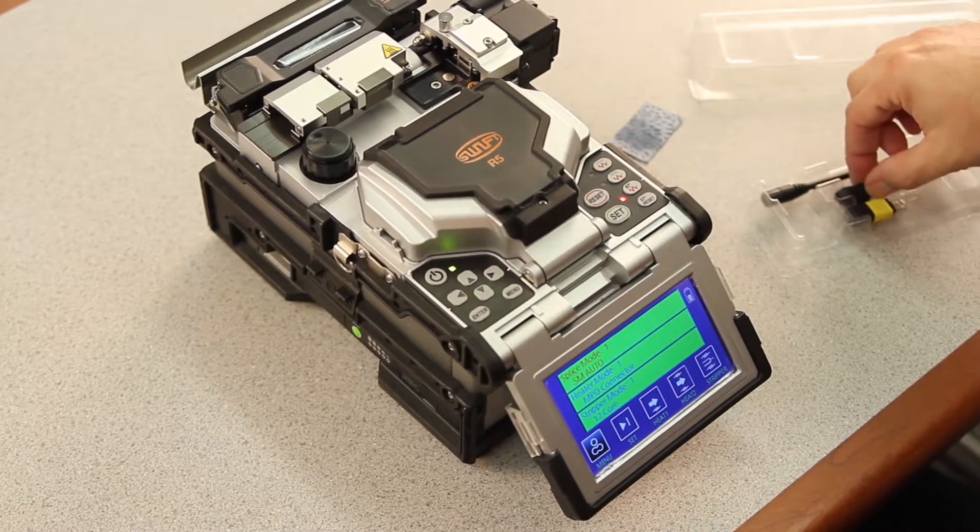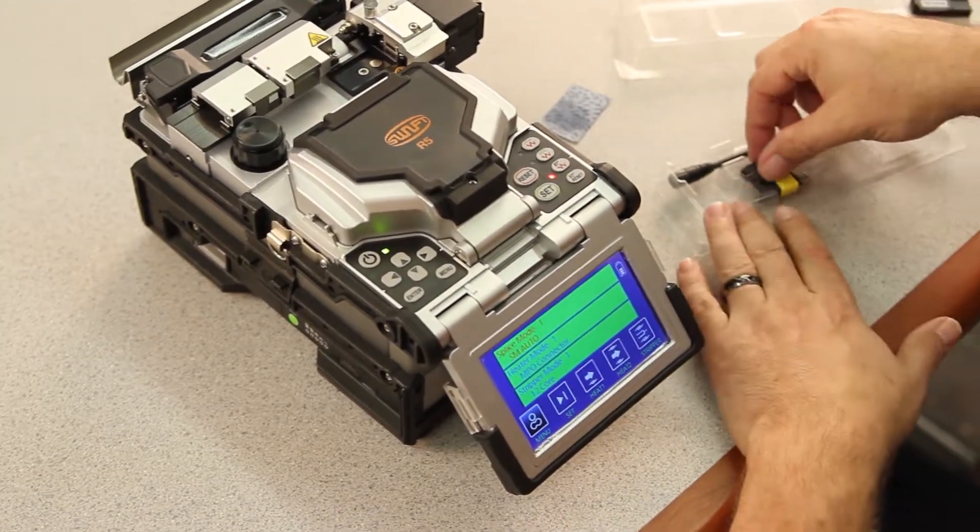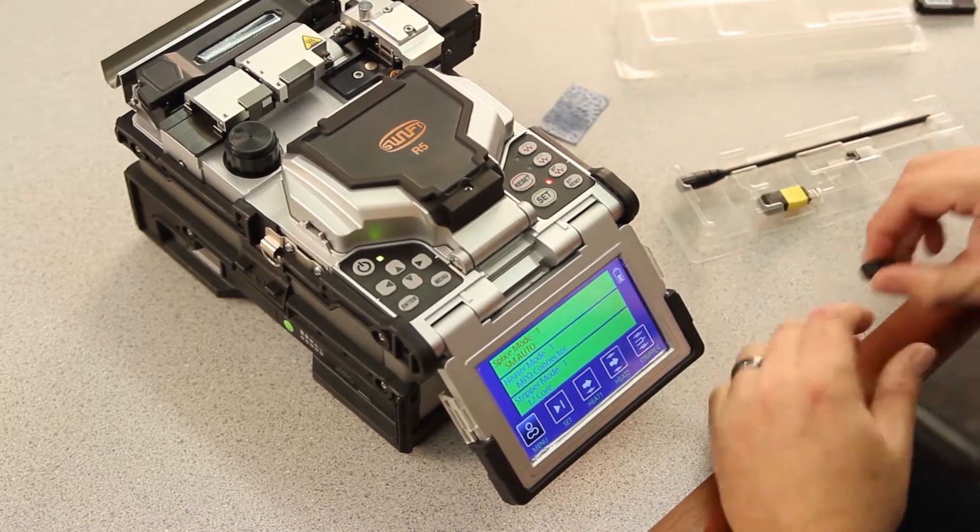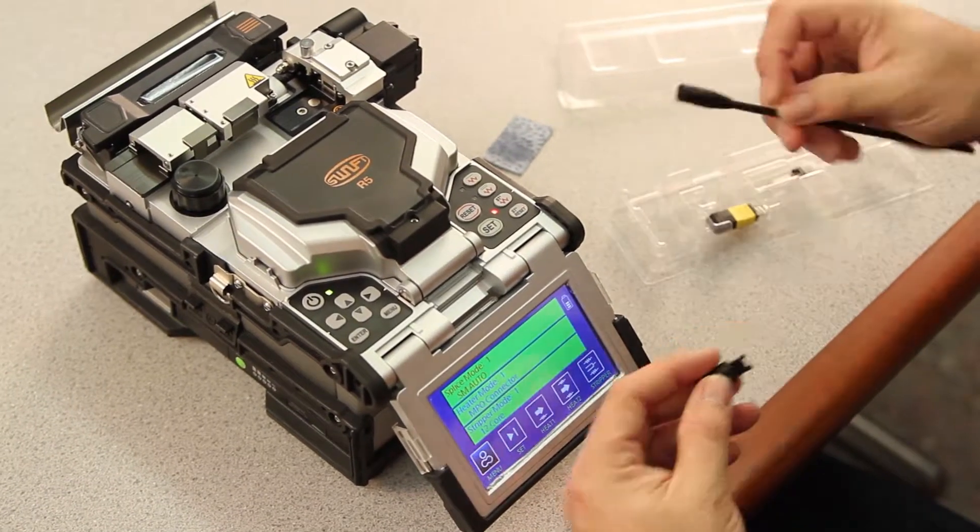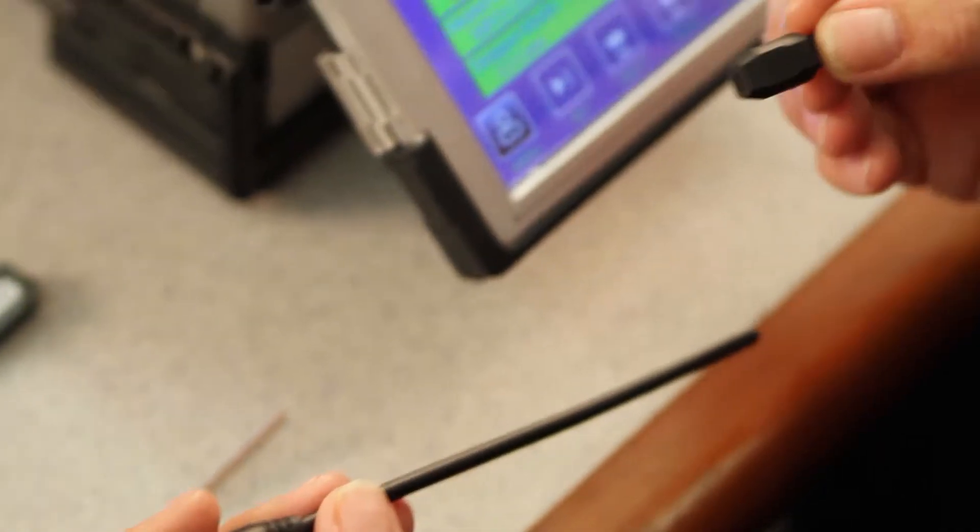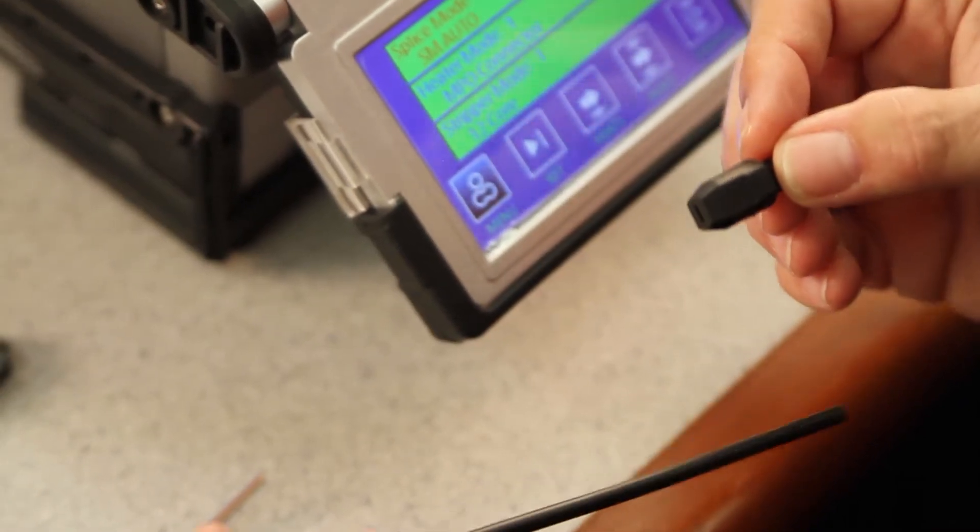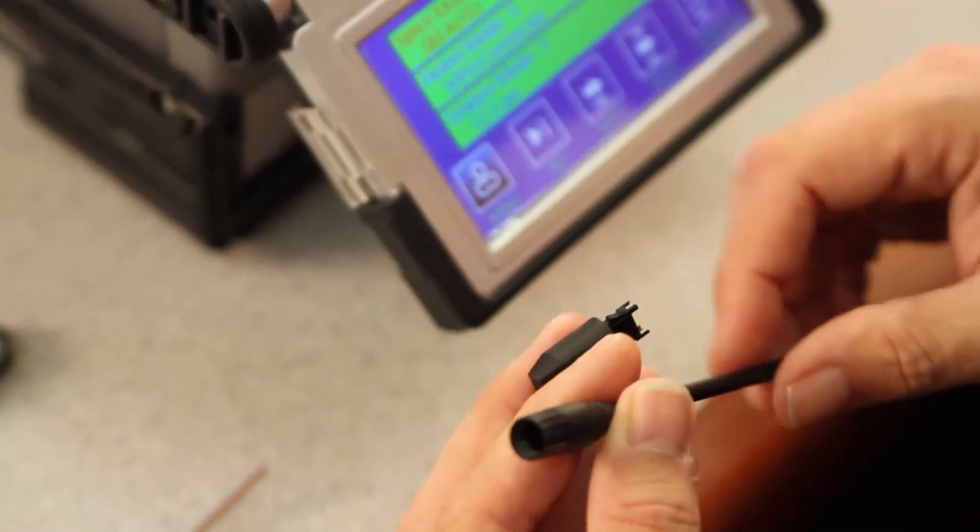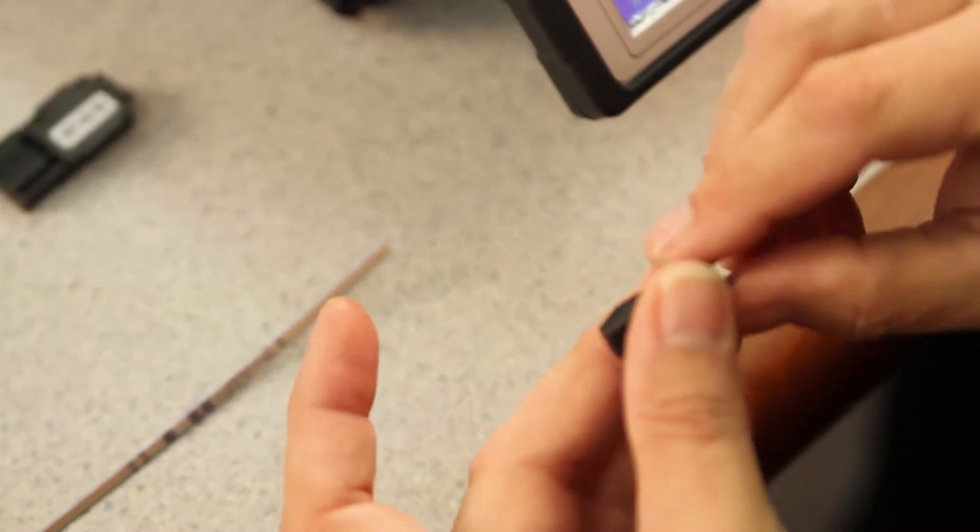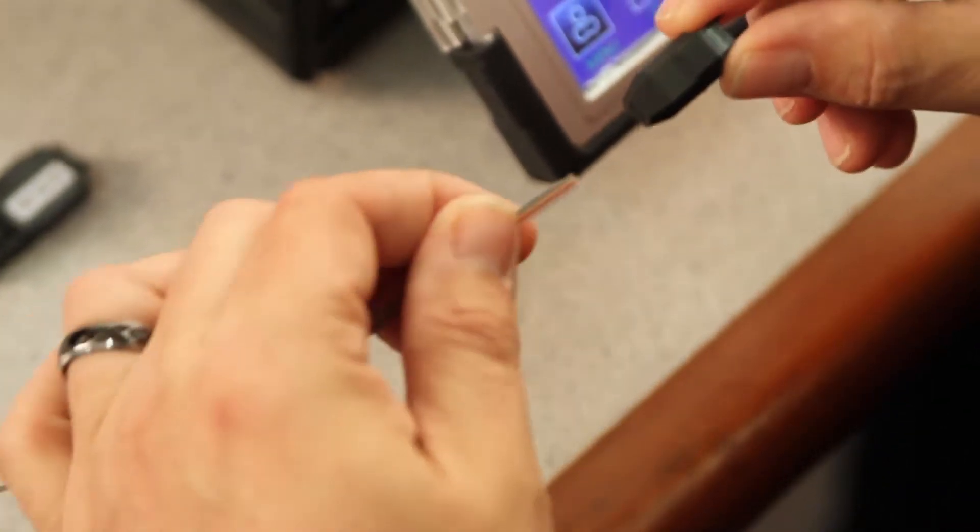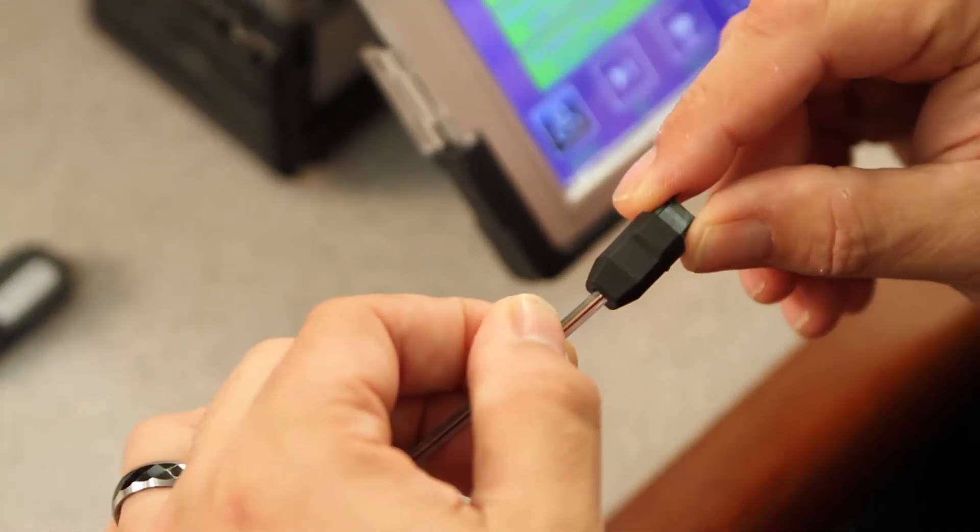Next, set up your connector. Each connector comes with the ability to terminate to 12 fiber round or 12 fiber flat ribbon. For demonstration purposes today, we will be terminating to the 12 fiber ribbon. Take your back boot, install it onto your fiber.